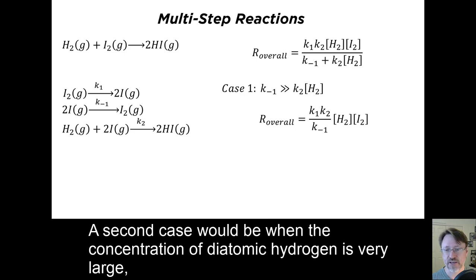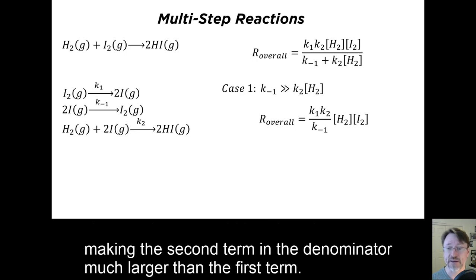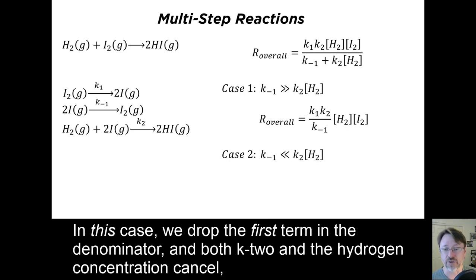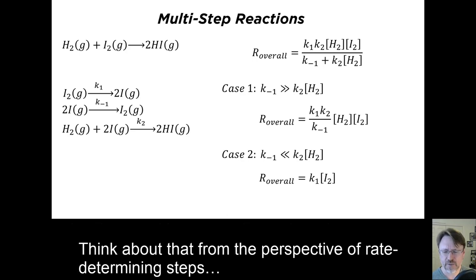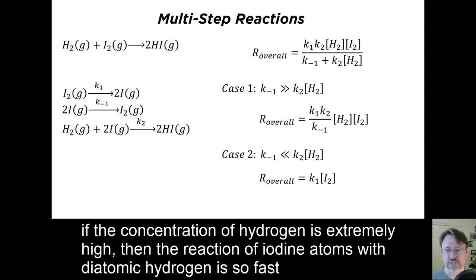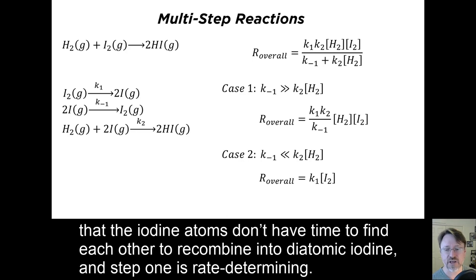A second case would be where the concentration of diatomic hydrogen is very large, making the second term in the denominator larger than the first term. In this case, we drop the first term in the denominator, and both K2 and the hydrogen concentration cancels, leaving us with an overall reaction whose overall rate law looks like the rate of just the first step in the mechanism. Think about that from the perspective of rate-determining steps. If the concentration of hydrogen is extremely high, then the reaction of iodine atoms with diatomic hydrogen is so fast that the iodine atoms don't have time to find each other to recombine into diatomic iodine, and therefore step one is rate determining.